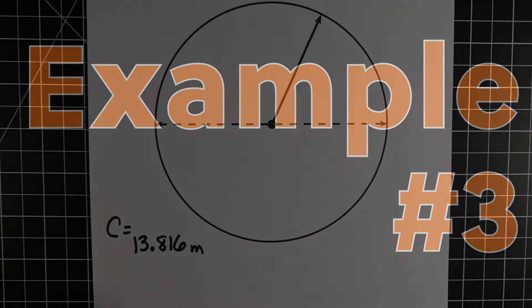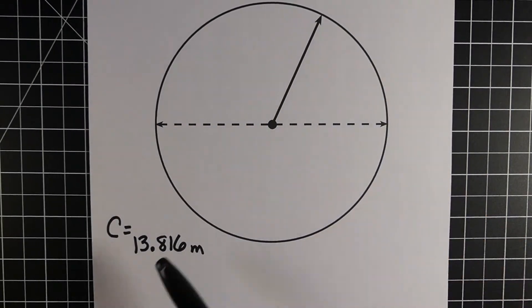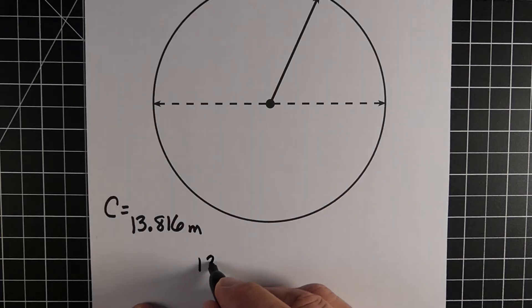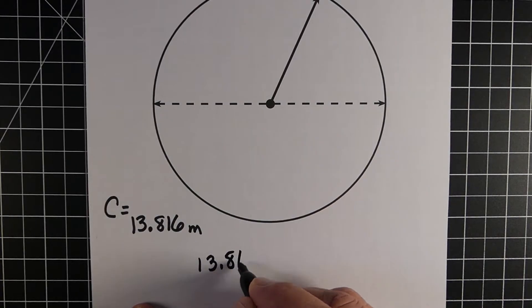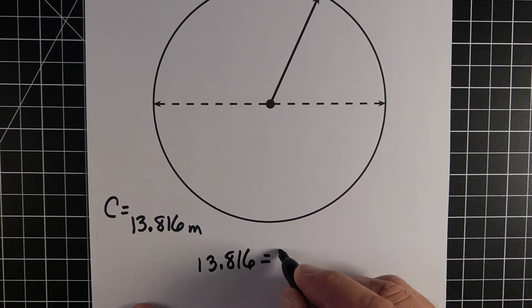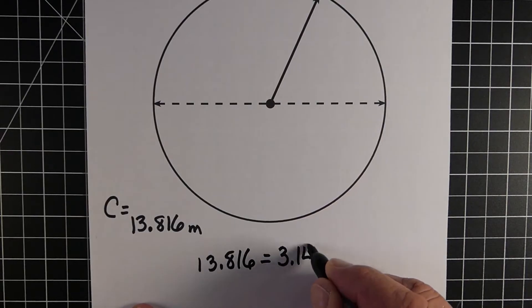So our last example, example number 3. Again, we start where we know the circumference, in this case 13.816 meters. And that's the distance around. And we know to find that, we just took that number, or the way we got that number was pi times diameter.